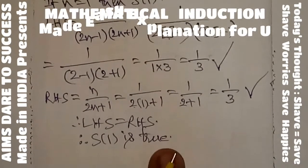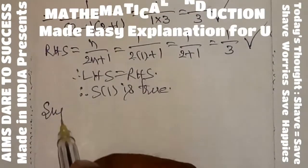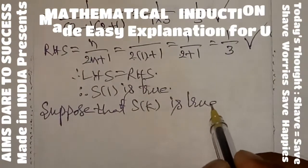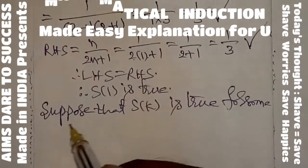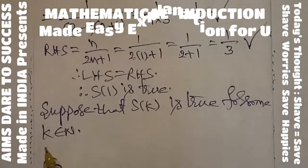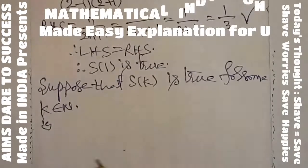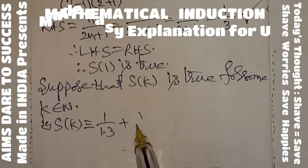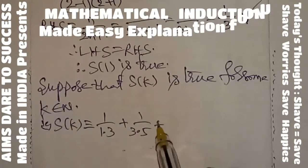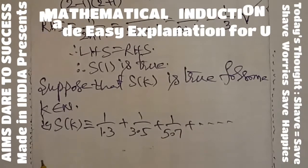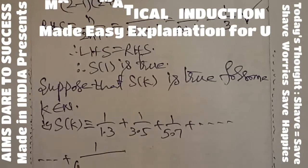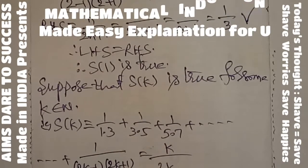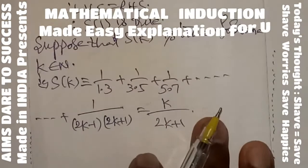First step completed successfully. Step 2: n = k. Suppose that S(k) is true for some k belonging to ℕ. K is a constant. That is S(k) = 1/(1×3) + 1/(3×5) + 1/(5×7) + ... + 1/((2k−1)(2k+1)) = k/(2k+1). This is the S(k) value.